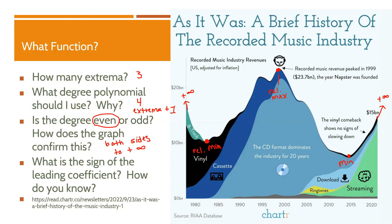Then I'm asked what is the sign of the leading coefficient. I made that decision based on the right side of the graph — the right side goes to positive infinity, so the leading coefficient is positive.